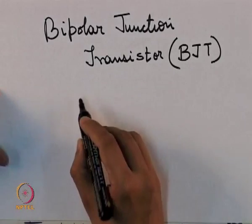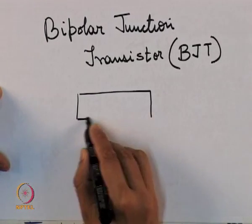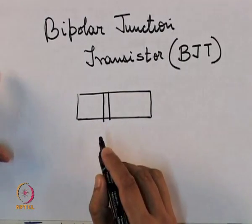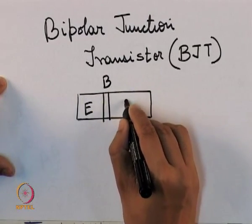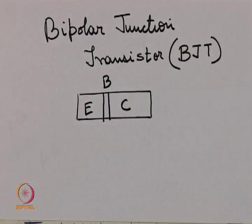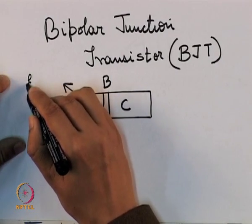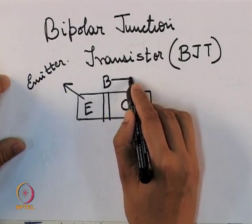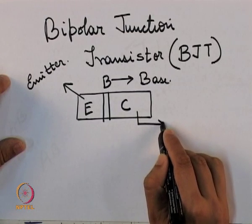The construction of a BJT is something like this — this is of course a simplified diagram; the construction of a BJT is usually much more complicated than this. There are three distinct regions in a BJT: the emitter, the base, and the collector.